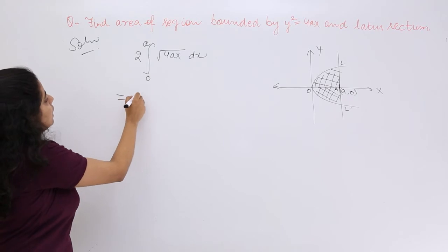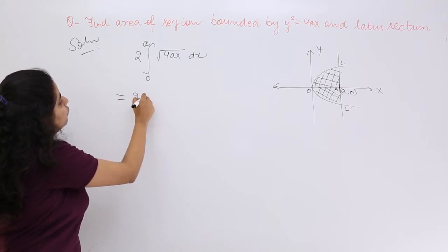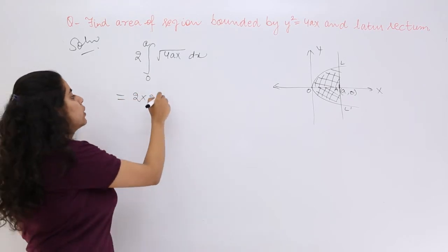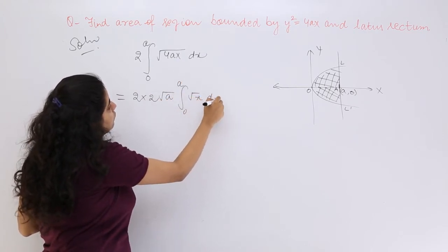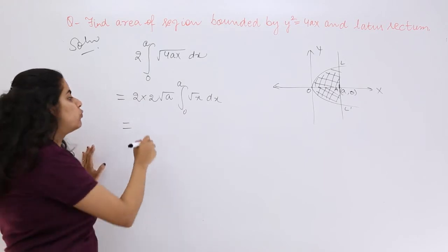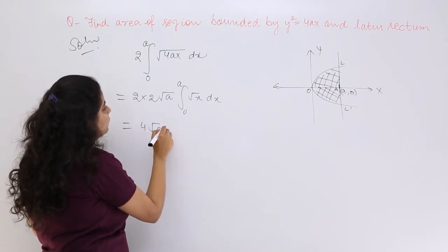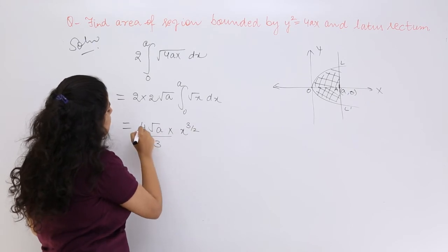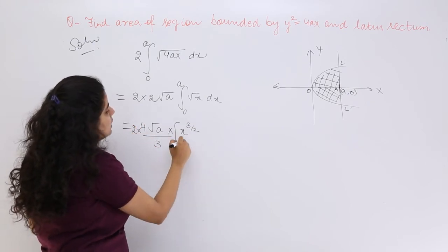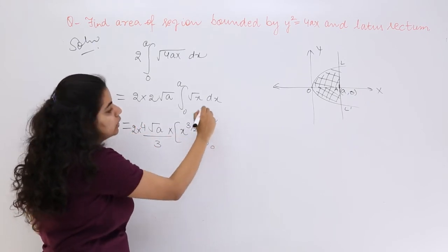So what is the answer? 2 is already there. √4 means again 2 is there. √A is a constant. Integration from 0 to A of √x with respect to x. So 4√A multiplied by x^(3/2) over 3/2, and this has to be evaluated from 0 to A.